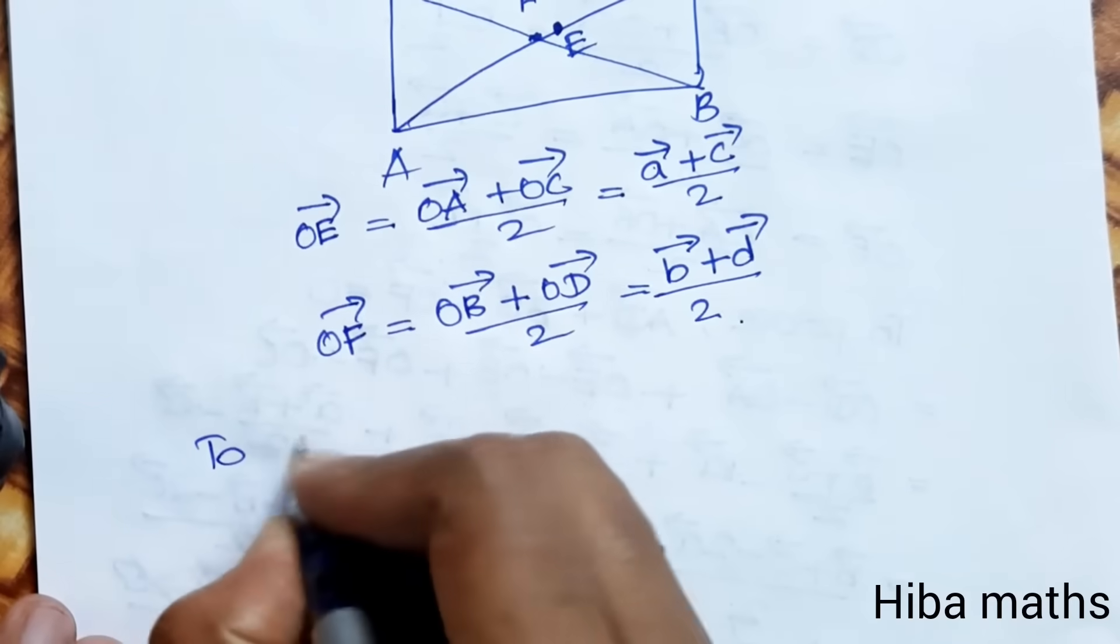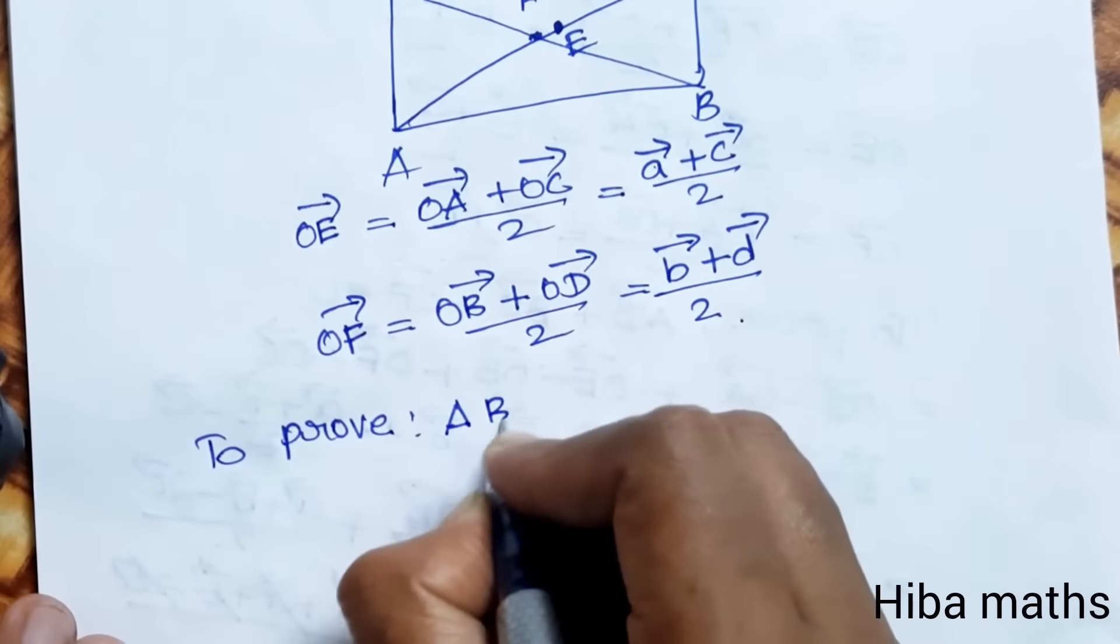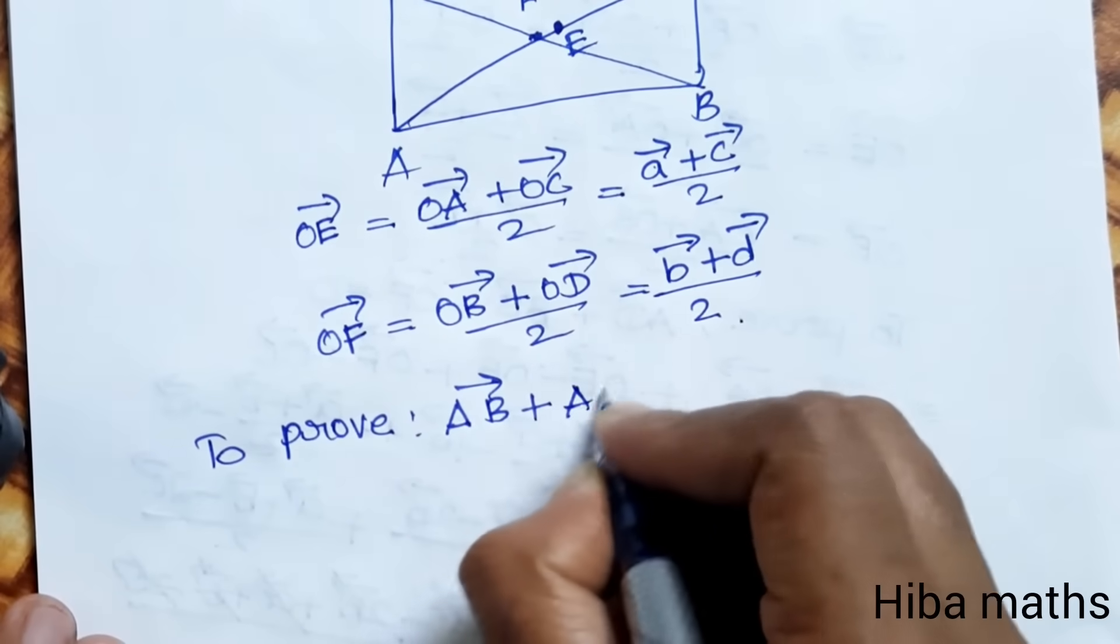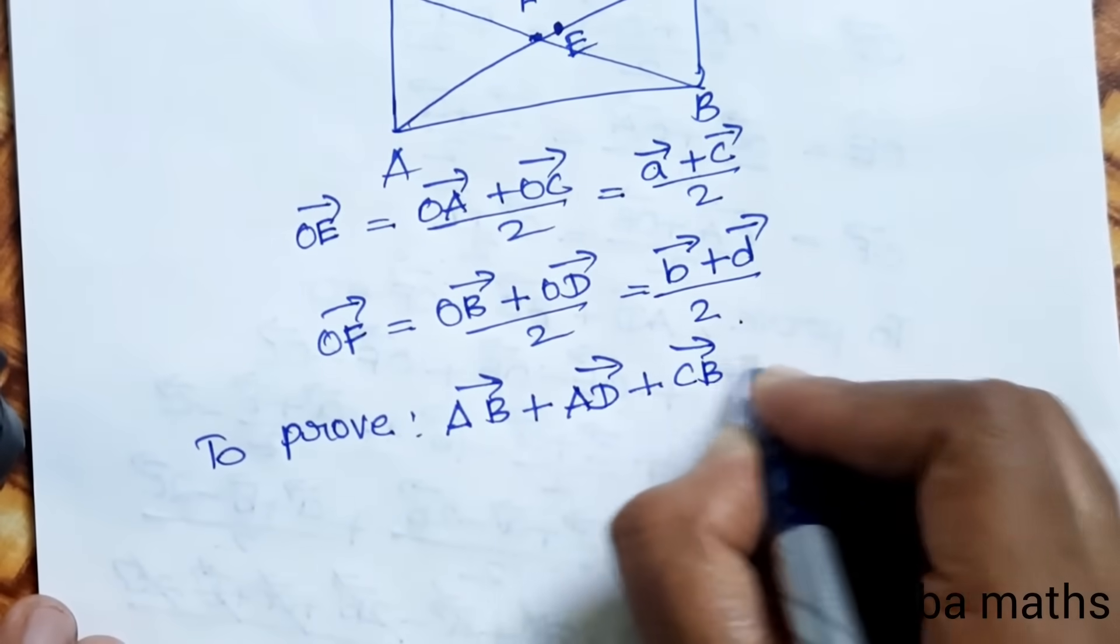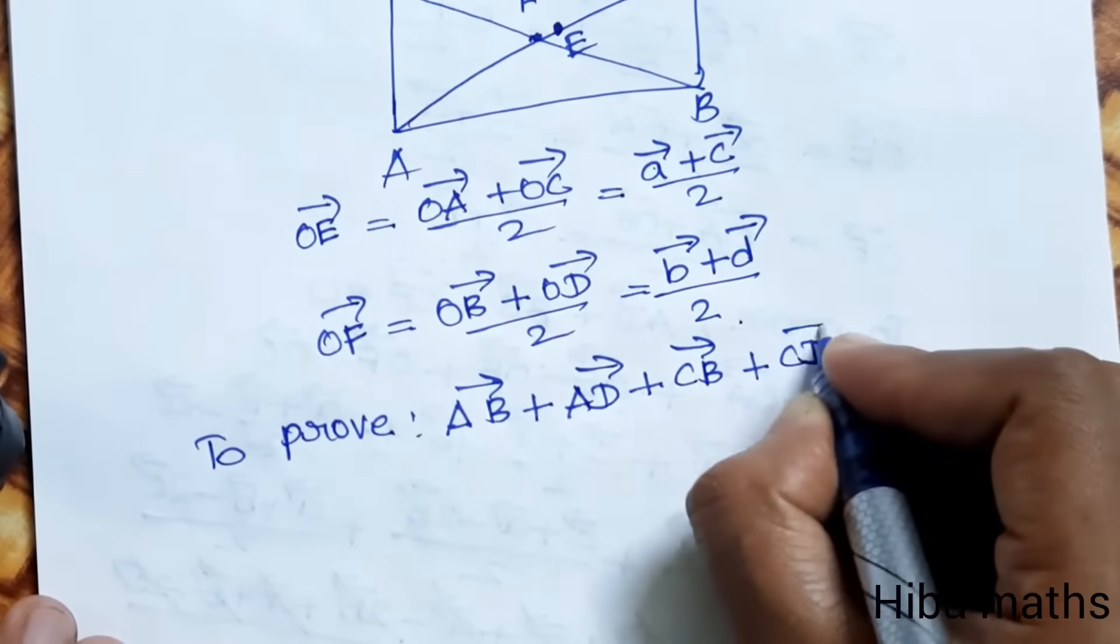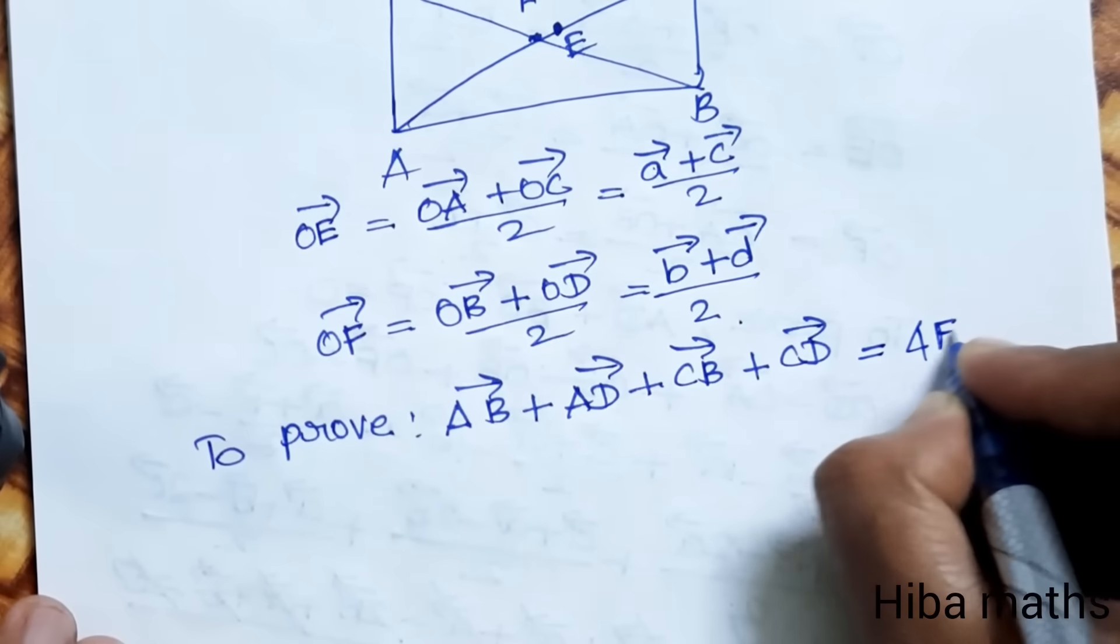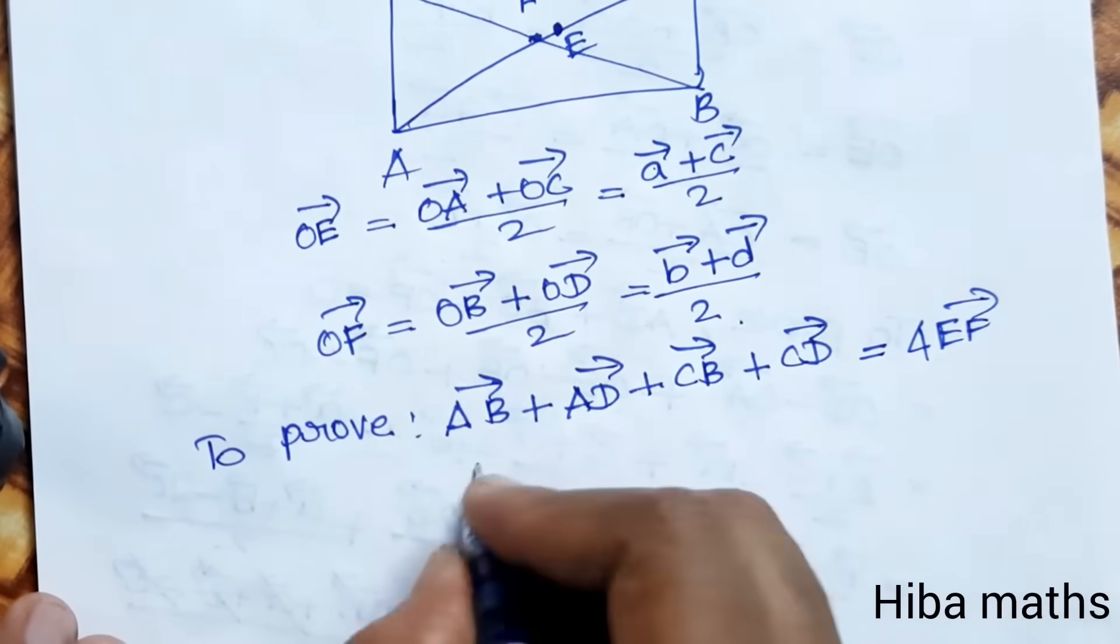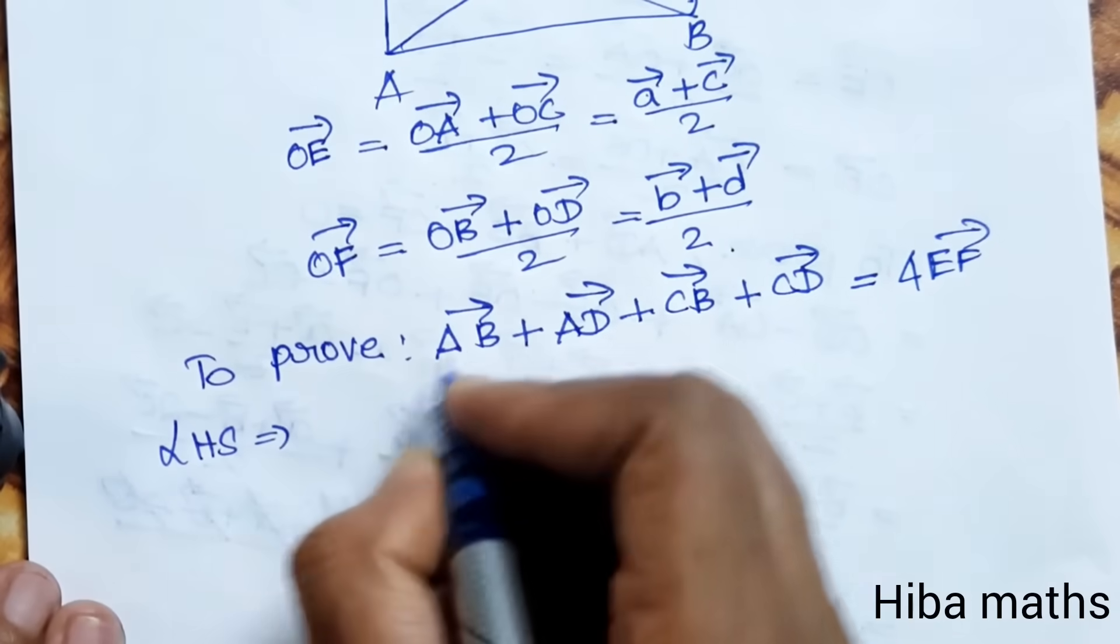Now to prove AB vector plus AD vector plus CB vector plus CD vector equals 4 times EF vector. We'll solve the LHS.